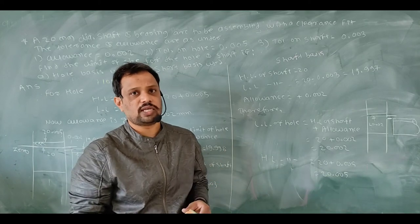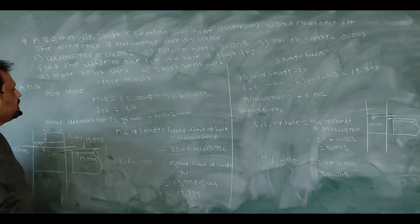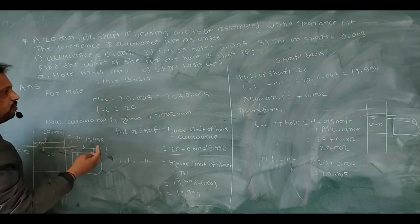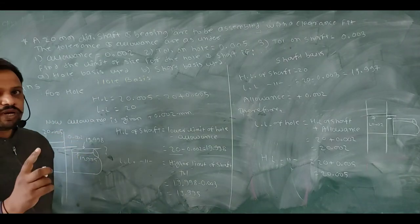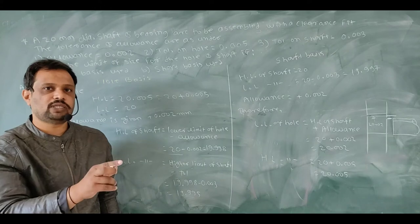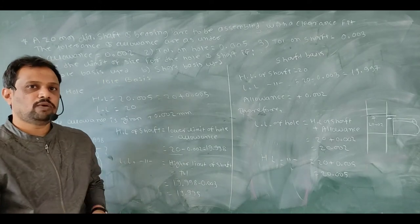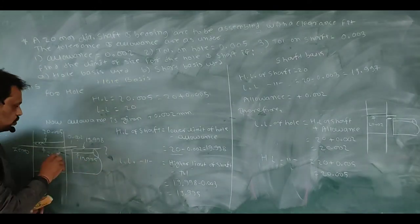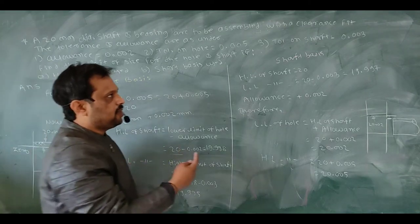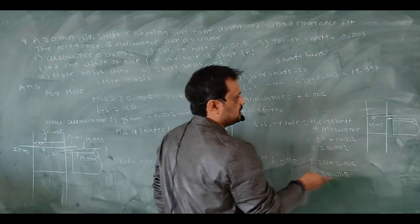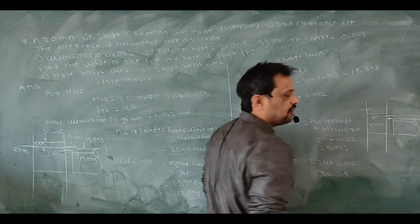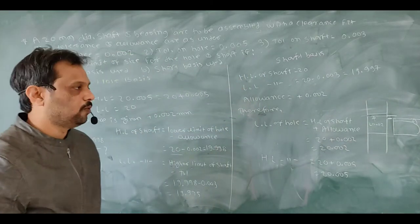So let's move towards the answer. For calculating the answer, there is one key concept: in hole basis system, the hole lower deviation is zero, whereas in shaft basis system, the shaft upper deviation is zero.